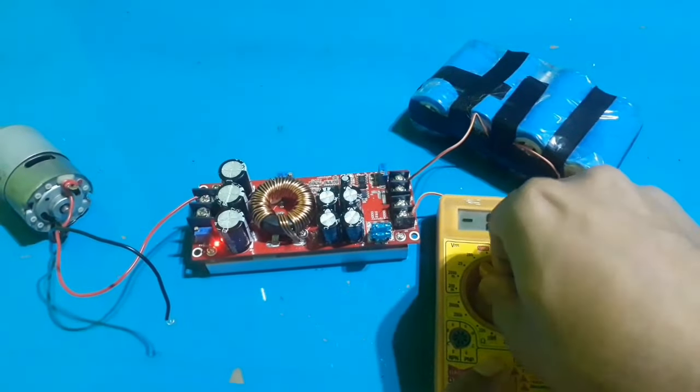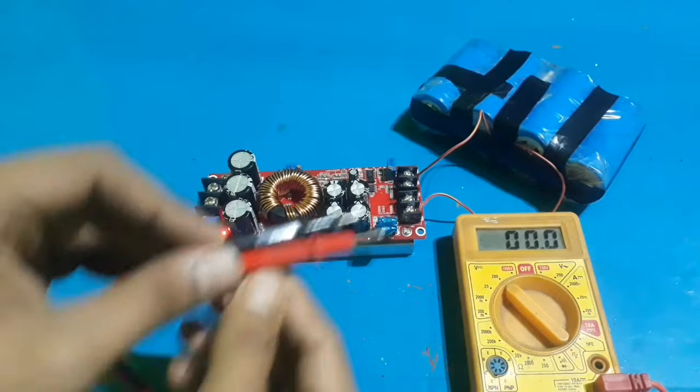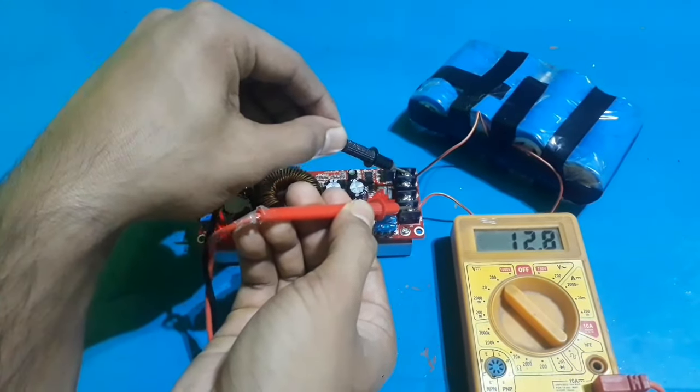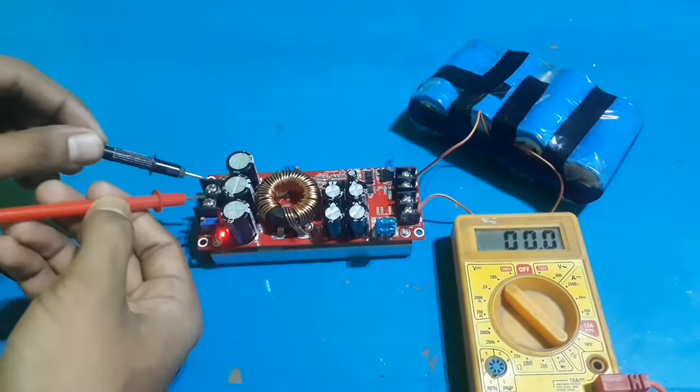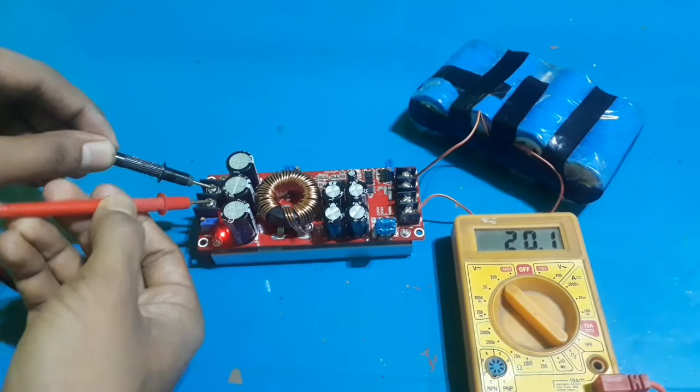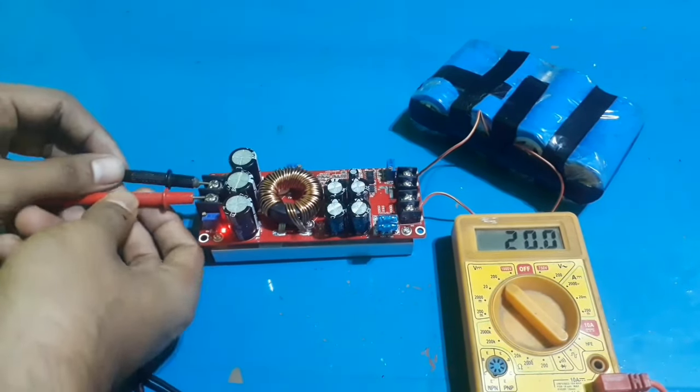Now see the voltage in the low battery voltage protection condition. The input voltage is still 12.9 volts and output is also the same as before, 20 volts.